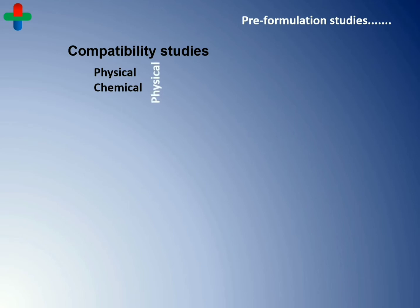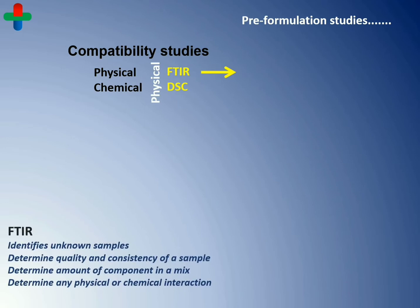The study of the physical interaction of the drug with another drug or excipient can be done with the help of Fourier Transform Infrared Spectroscopy and Differential Scanning Calorimetry. The FTIR study of the drug is done to know the types of functional groups present in it. It helps identify unknown samples, determine quality and consistency of the sample, the amount of components in a mixture, and the presence of any physical or chemical interaction in a blend.